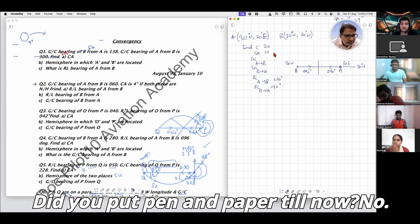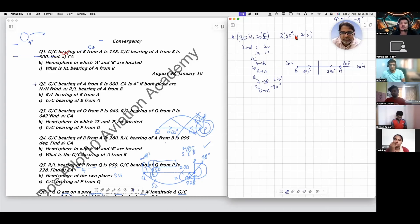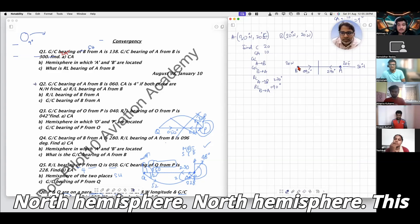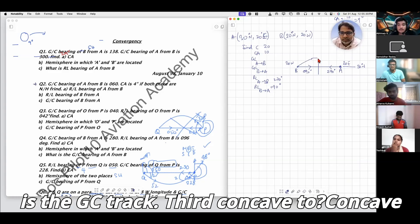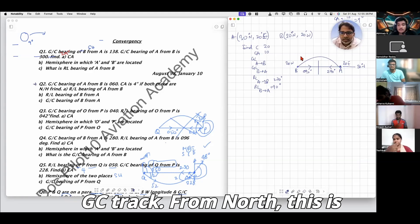See which hemisphere they're in. The GC track is concave toward the equator. This is the GC track. From north, if this is 90 and the conversion angle is 10 degrees in the eastern hemisphere, how much is this? 80 degrees.